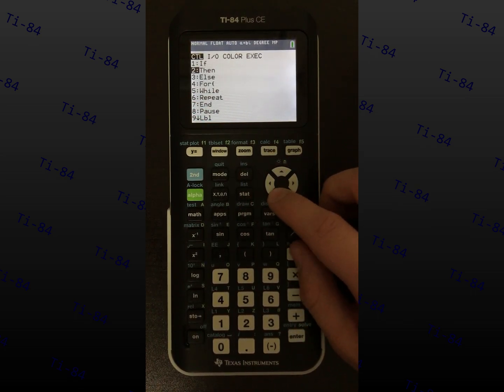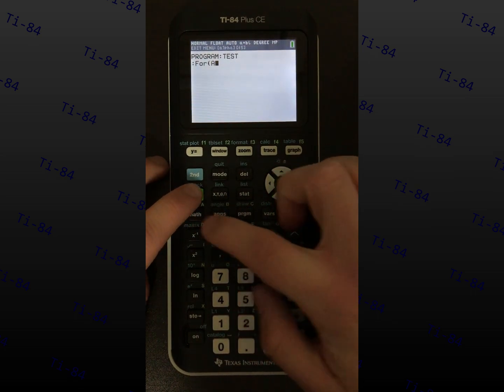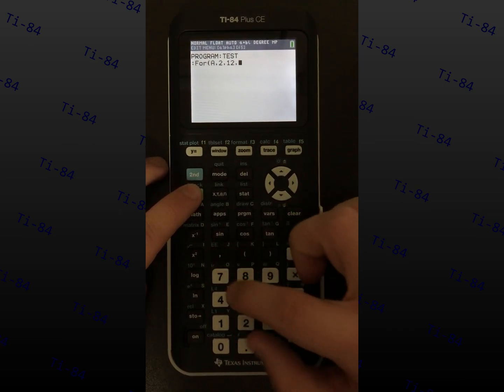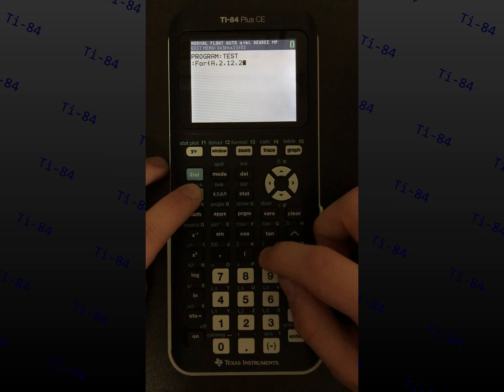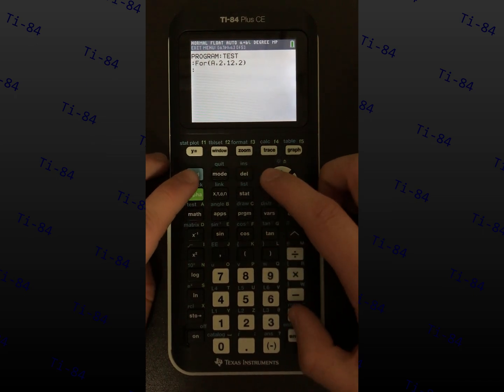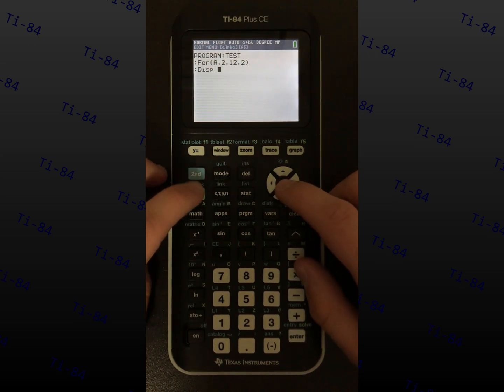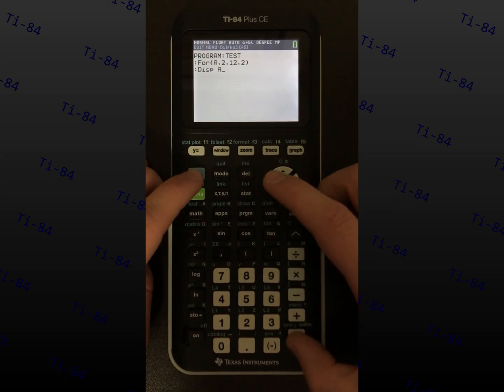To print even numbers 2 through 12, create a for loop. For loops have four fields: the variable used to track what loop it is on, the starting number, the final number, and the increment. Insert display variable, and type end on the next line to complete the for loop.